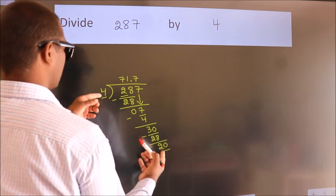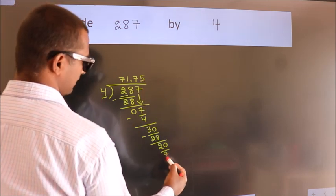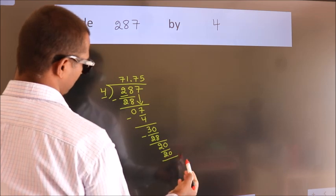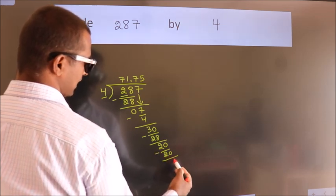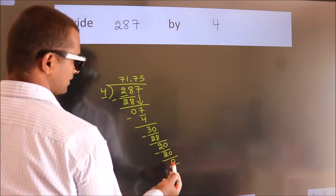So 20. When do we get 20 in 4 table? 4 times 5 is 20. Now we subtract. We get 0. We got remainder 0, so this is our quotient.